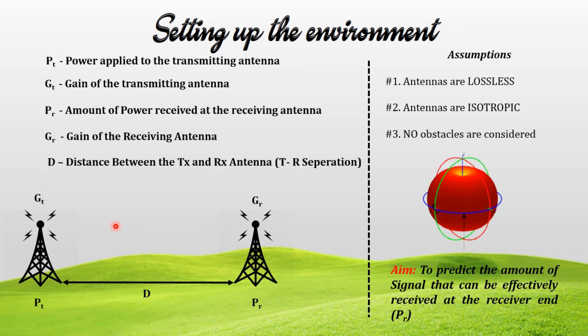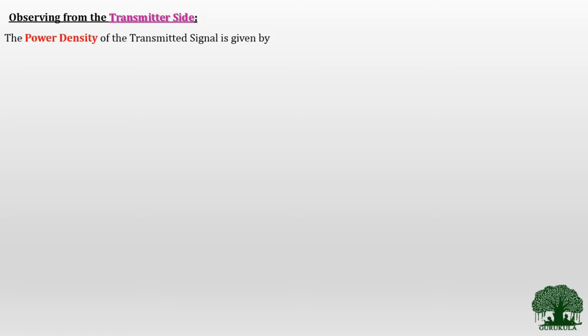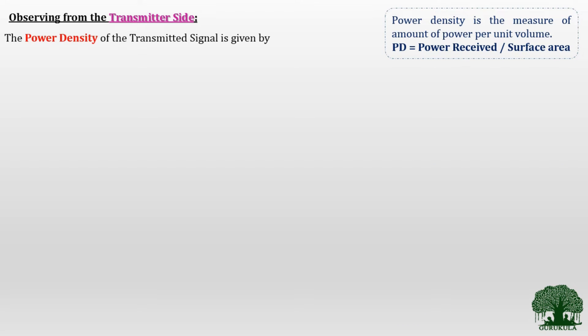The main aim of this derivation is to find the value of PR — the amount of power effectively received at the receiver end. To identify the maximum power receivable at the receiver, we first need to know how much power was transmitted. Starting from the transmitter side, the transmitted power is defined using the term power density. Power density PD is the measure of power per unit area, mathematically defined as power over surface area.